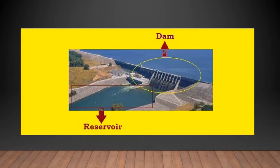Looking at this picture, you will understand — the dam stops the water and the reservoir stores it. The water in the river is always moving and flowing into the sea, so it is difficult to stop that large amount of water. That is where dams come in — they stop the flow of water so we can store it and use it later. Some rivers only flow for a few months, so we have to store the water for use in further days.